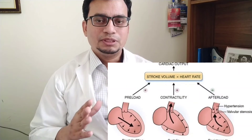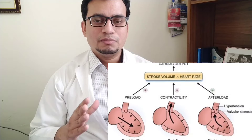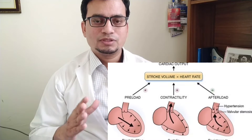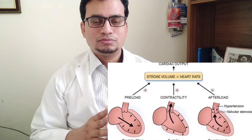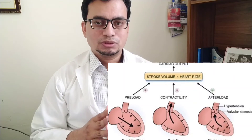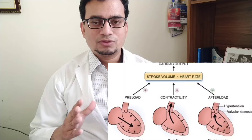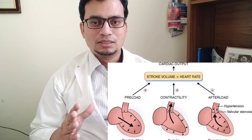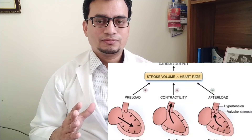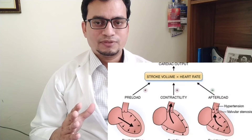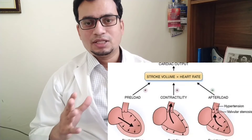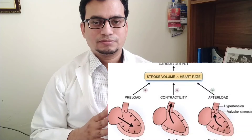Preload is one of the main determinants of stroke volume and cardiac output. The other determinants of stroke volume are the contractility of myocardial fibers and the afterload.